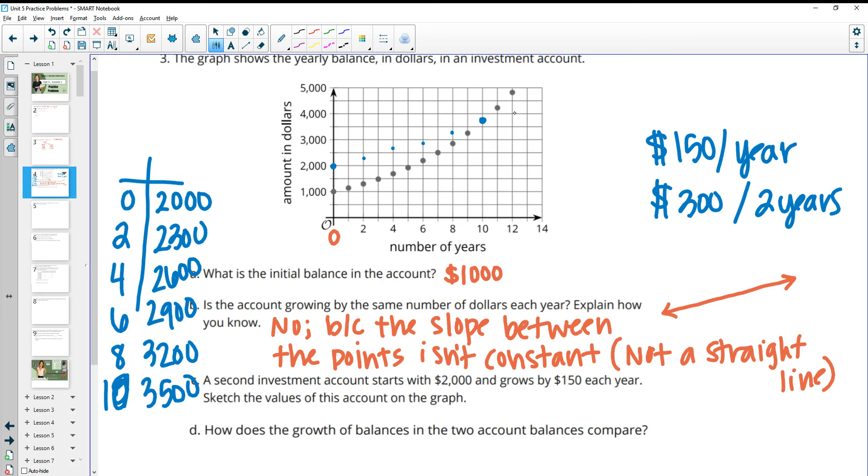So at 10, it's at 3,500 and so on. So then this would keep going. At 12, it would be at 3,800. Where am I at here? 10 was 3,500. Okay, and then 3,800, and then 4,200. But something like that.